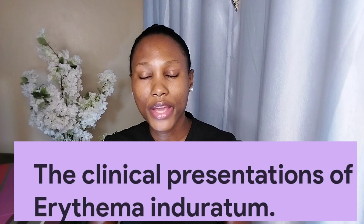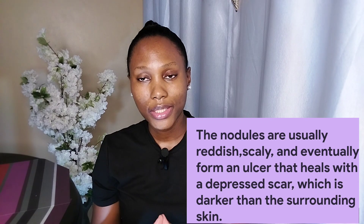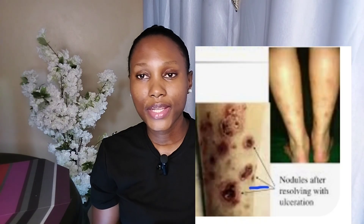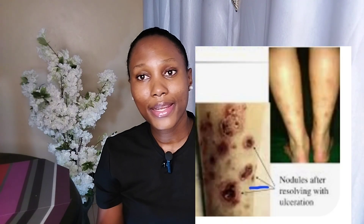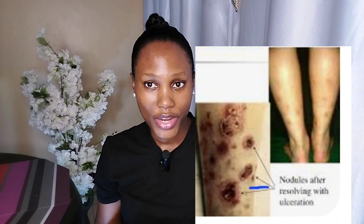The clinical presentation of erythema induratum is that we are going to have nodules within the fat layer of the body. These nodules are going to be reddish, they'll have some scales on top of them, and they're usually tender and painful when touched. They are usually between one to two centimeters in diameter. These nodules evolve over time, becoming bigger, and eventually they ulcerate — forming an ulcer. These ulcers can heal with time, forming depressed scars.